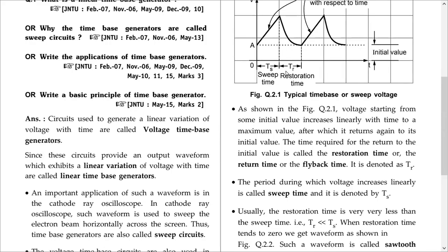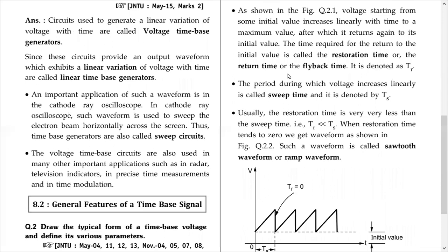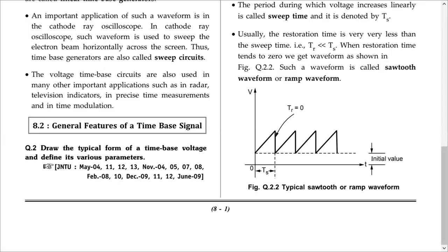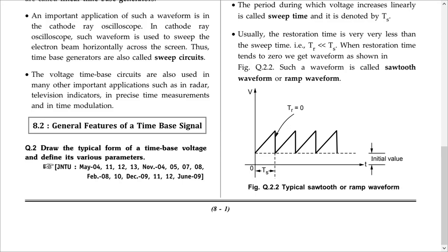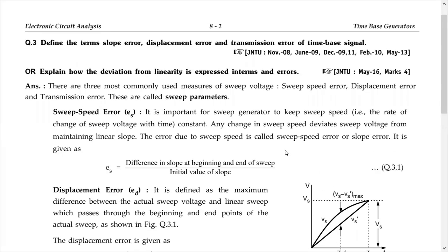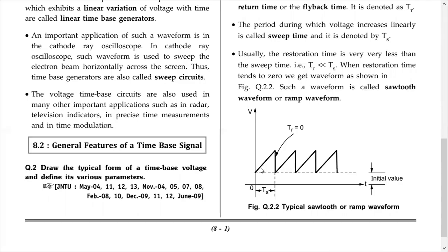If Tr is zero, such a waveform is called a sawtooth or ramp waveform. It is called a sawtooth waveform because if you look at a saw, its blade has this particular shape. It is also called a ramp waveform — ramp is an inclined surface, and this waveform resembles that shape as well.